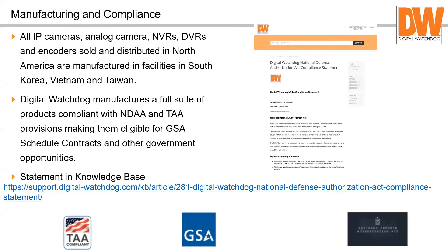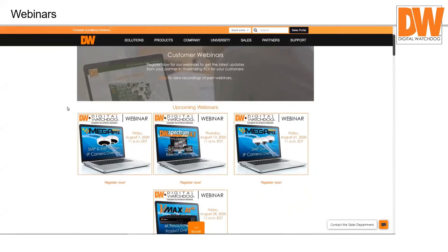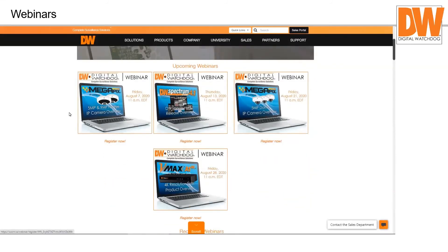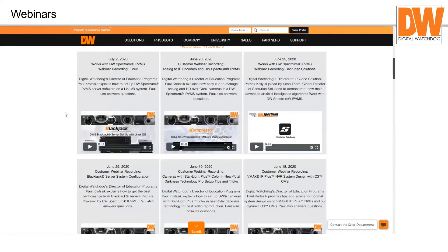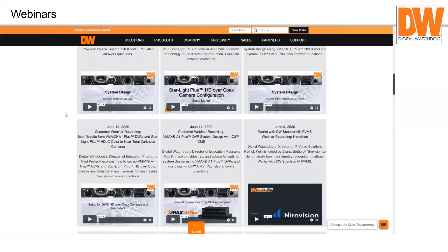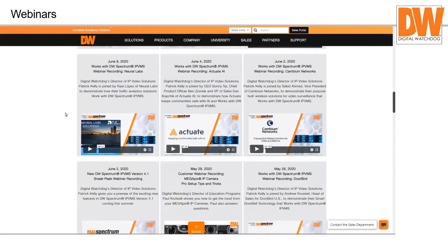We have a full list of NDAA-compliant products on the support page, including all Blackjack servers and the majority of our cameras — maybe only three or four models are not yet compliant due to certain components, and we're working on replacing those. Our products are manufactured in South Korea, Vietnam, and Taiwan. If government money is involved, you can use our equipment with confidence. Upcoming webinars include Spectrum 4.1, a new 5-megapixel camera webinar, and a 4K HD over coax webinar on Friday August 28th — which is also a release week for that product.